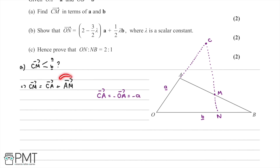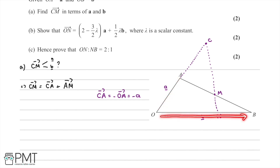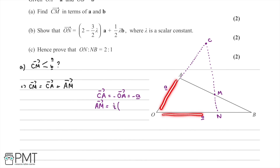Taking a look at AM: recall M is the midpoint of A and B. We know that we can get from A to B by going negative a and then adding b. Since M is the midpoint, we can go from A to M by going half of negative a plus b. So AM is equal to one half of (negative a plus b).